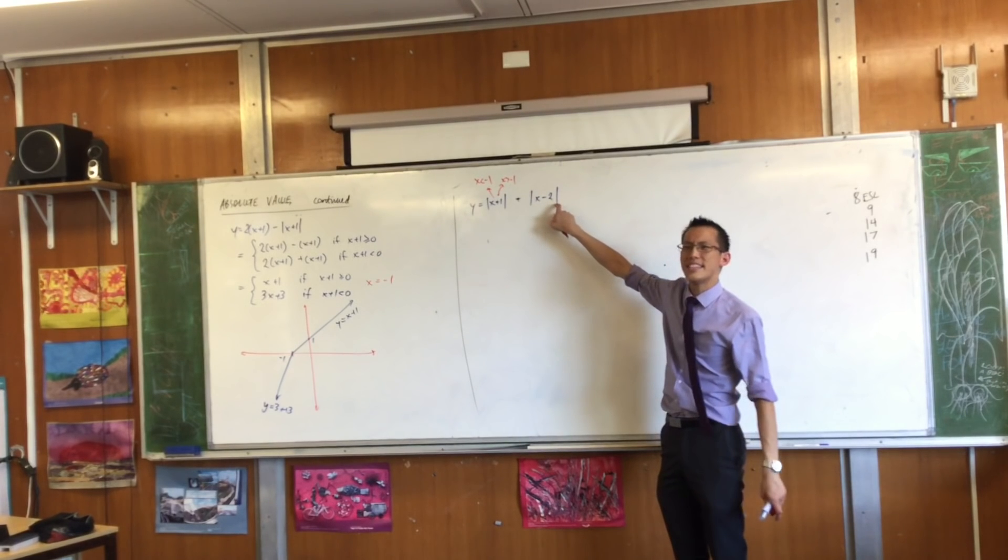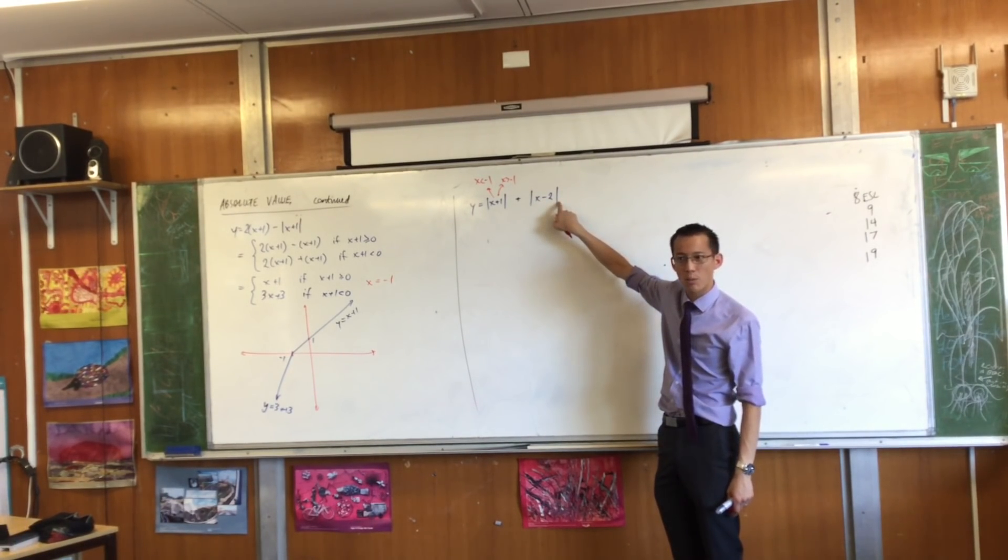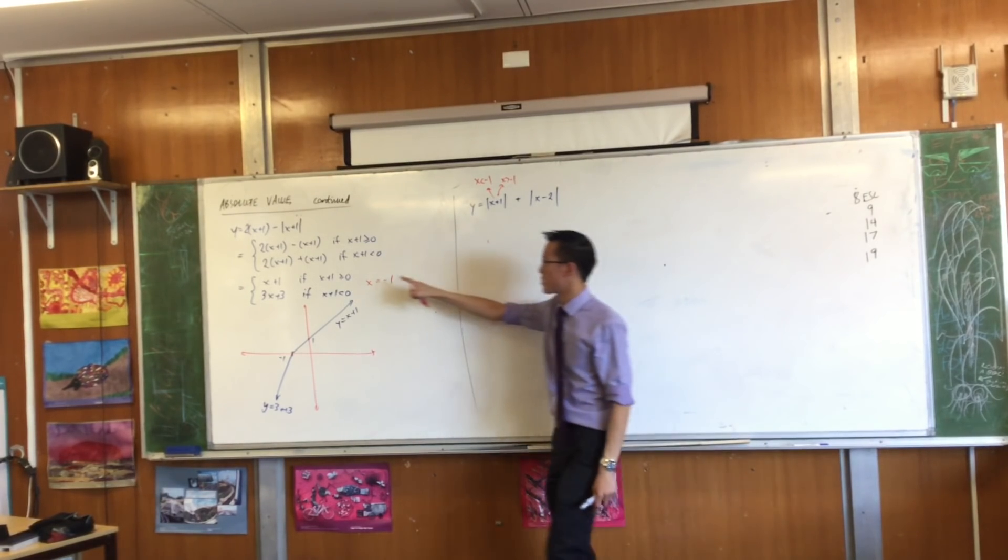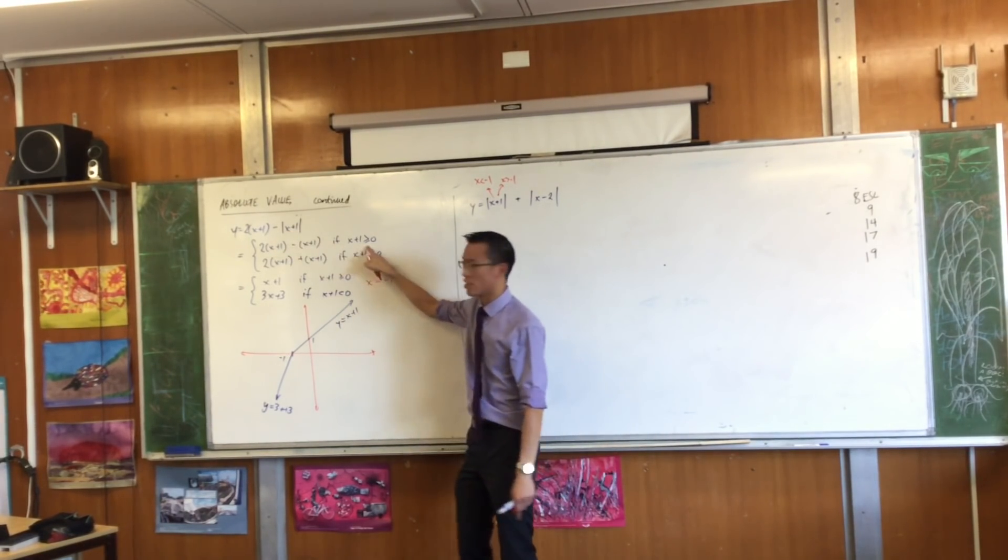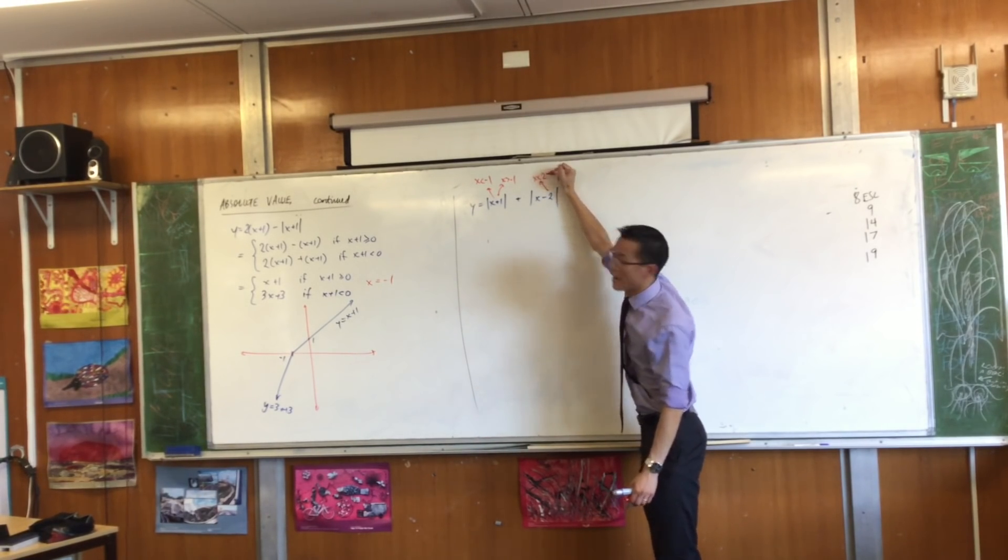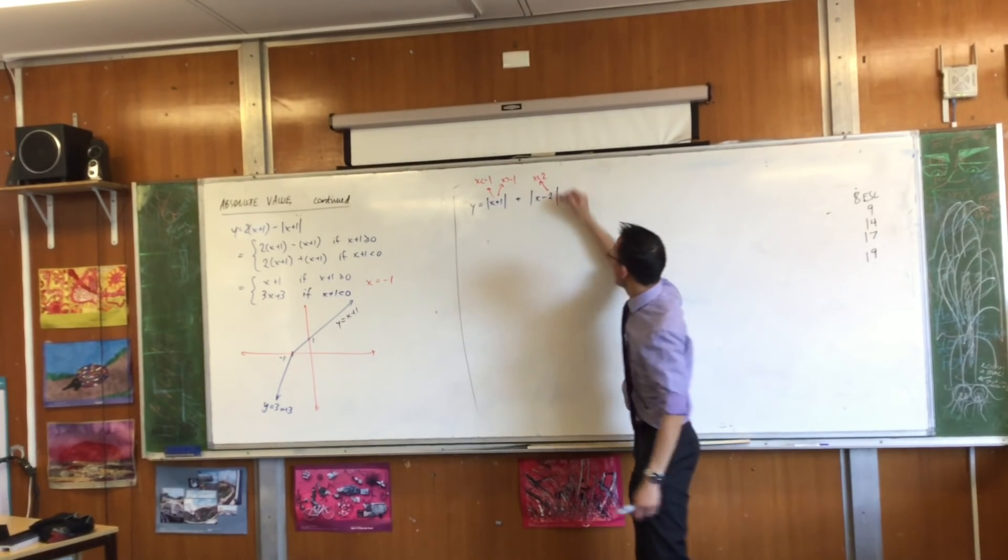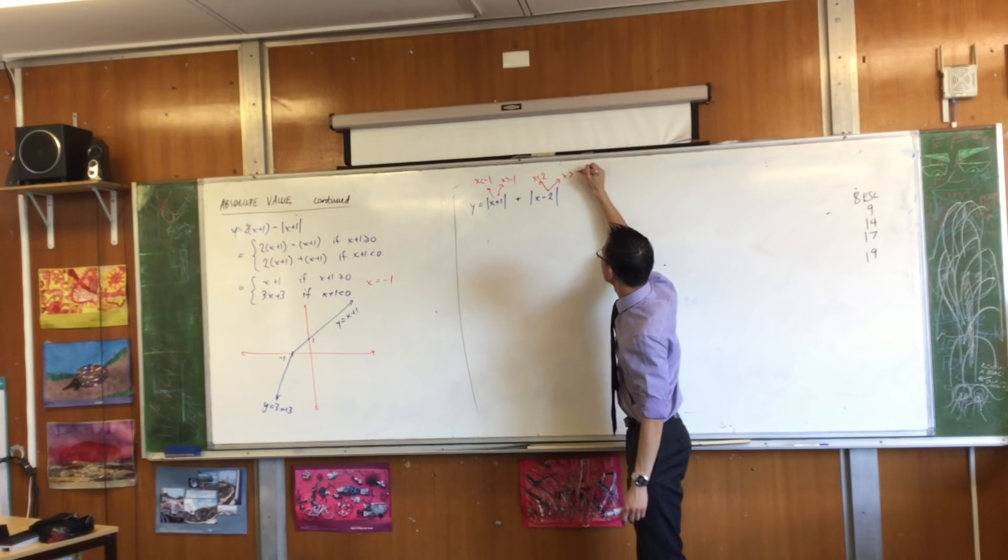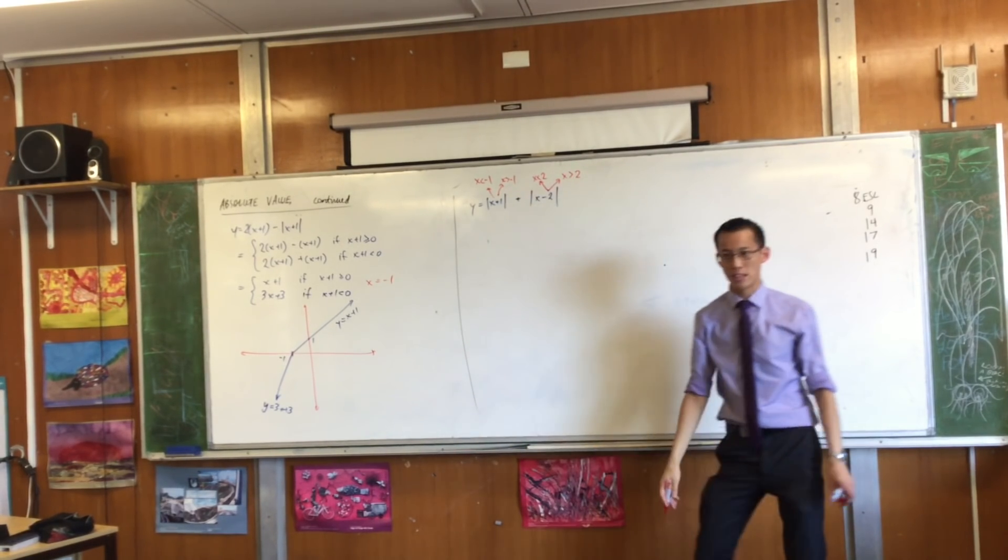Look at this one. Where does this guy switch over? Can you work it out without writing it all down? It's going to switch over at two. You're starting to see the pattern, aren't you? You're like, oh, that turns into negative one. So there's a version of this when x is less than two, and then there's another version of this when x is greater than two. Do you agree?